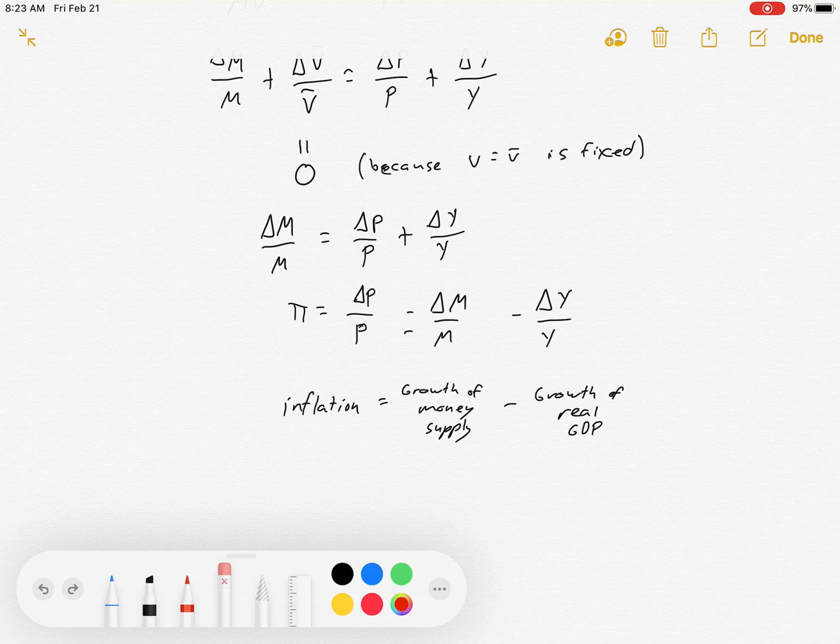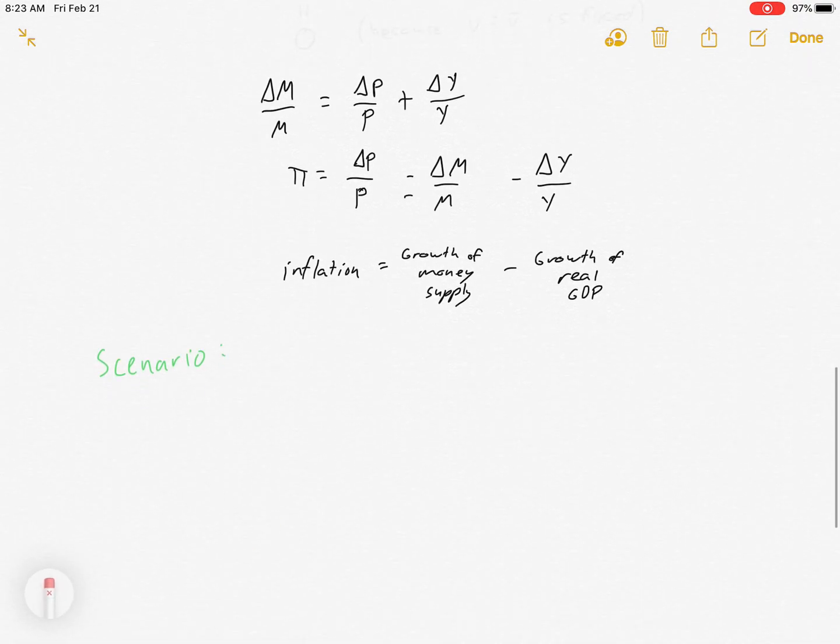If your money supply is growing faster than your actual economy, you'll have inflation. If your money supply is growing slower than the economy, you'll have deflation. And it also suggests that there is a one-to-one relationship between the money supply and inflation.